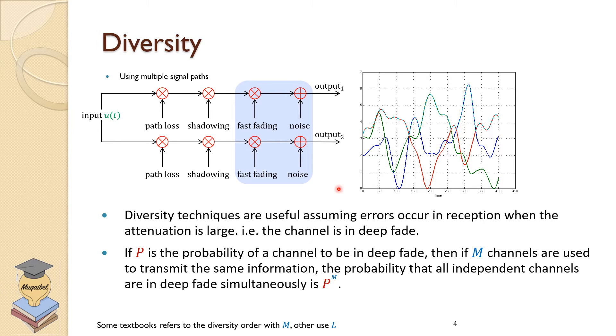Diversity techniques are useful assuming errors occur in reception when the attenuation is large. So if there is an error with diversity, one could have small amplitude or power while the other one would be strong.